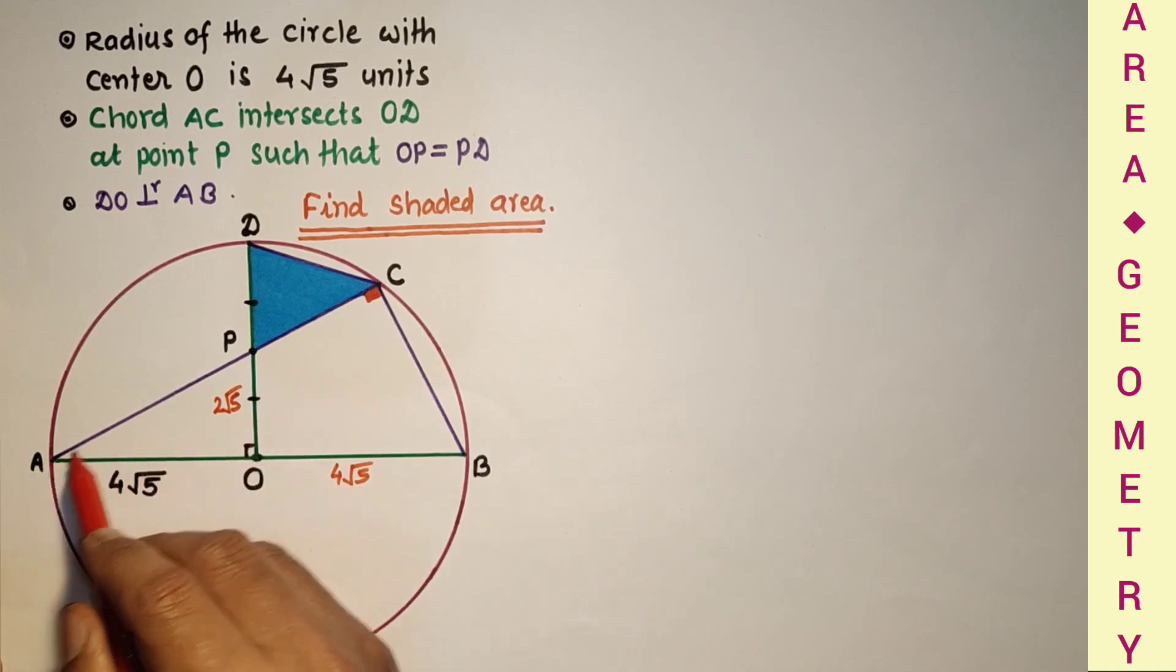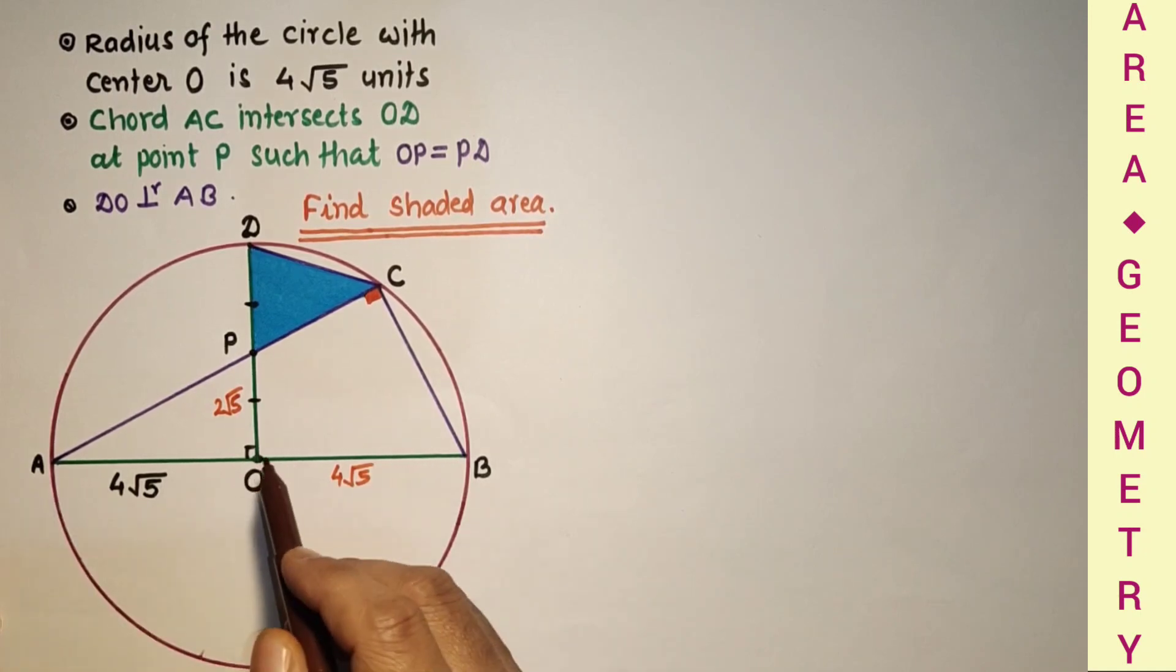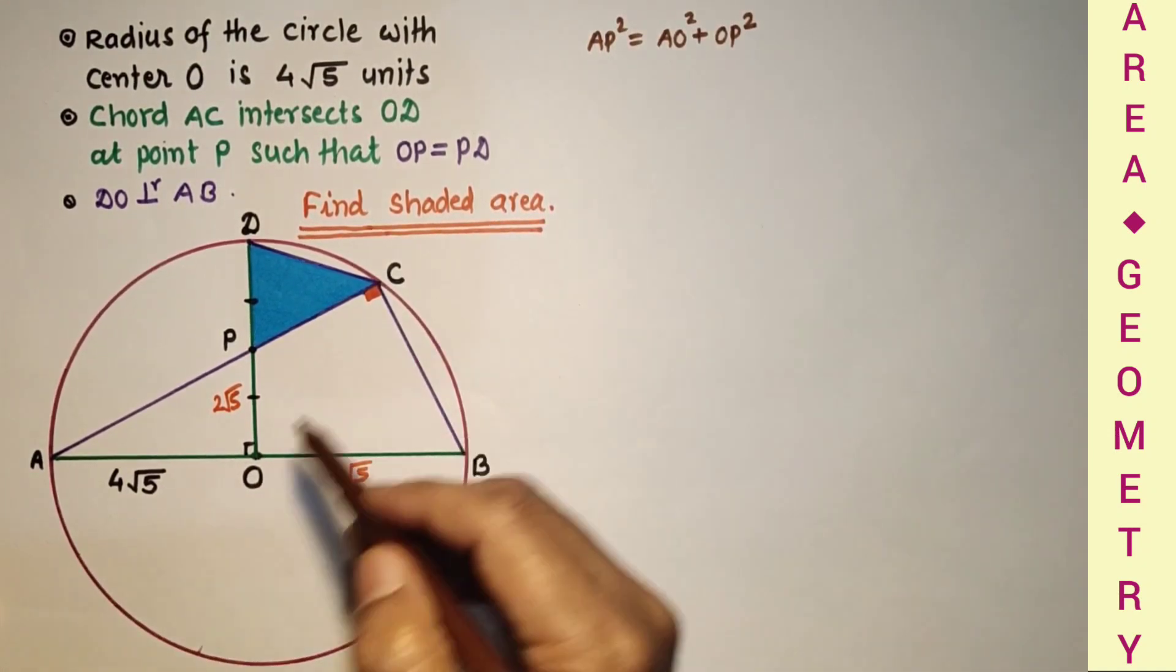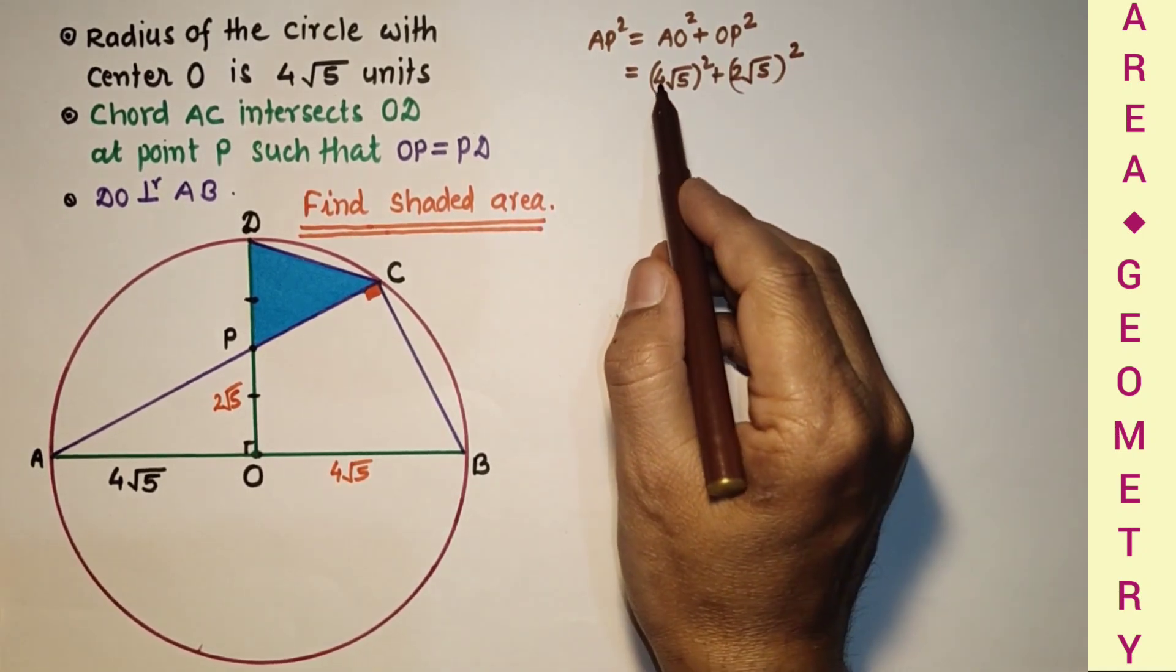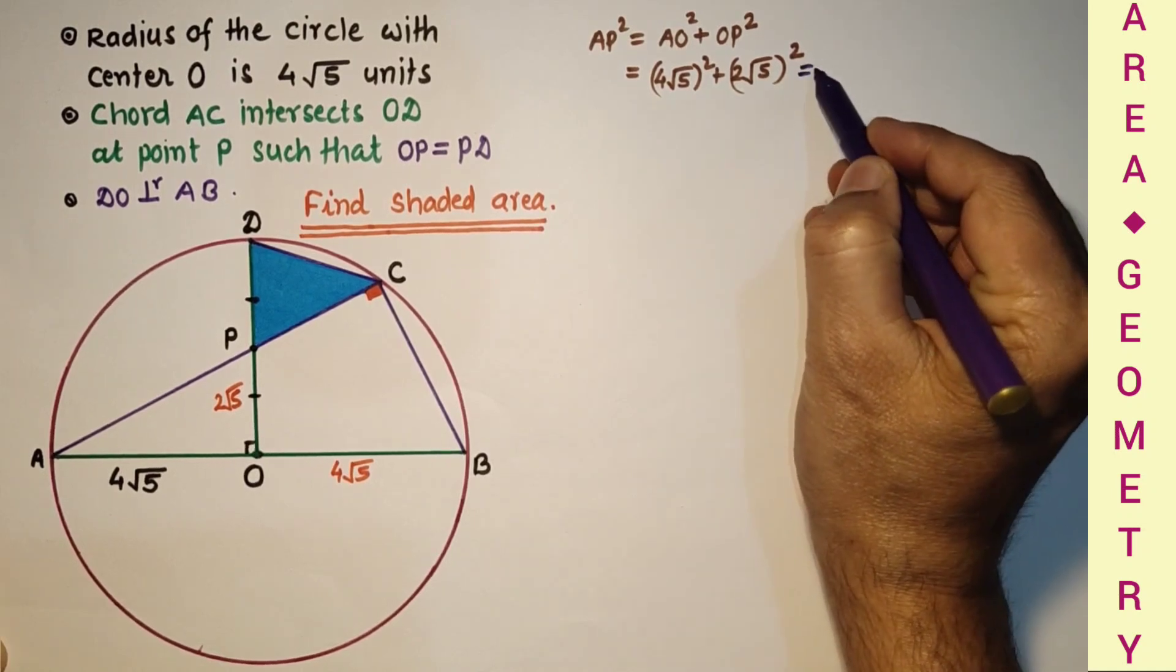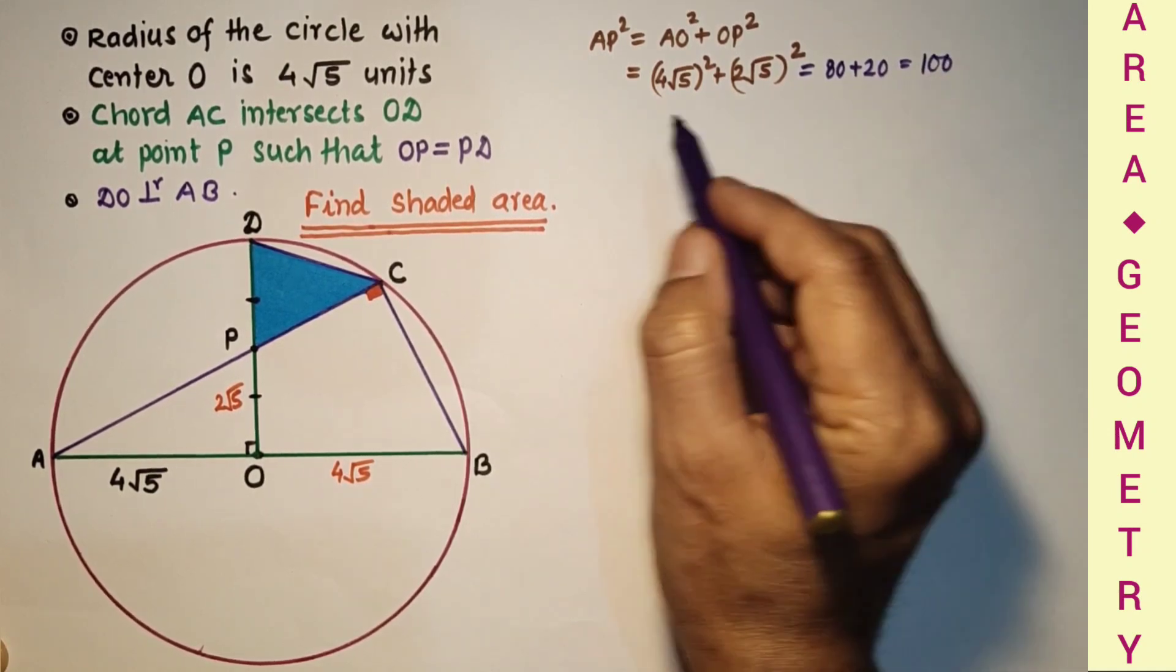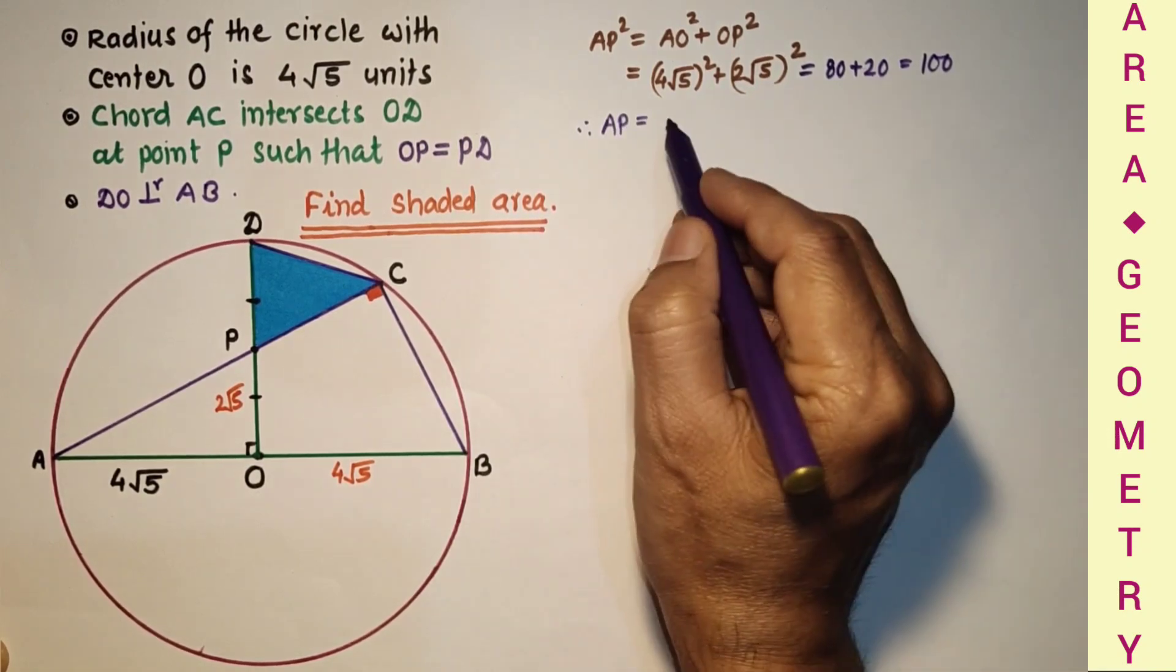So by Pythagorean theorem we can find this AP. So AP square is equal to AO square plus OP square. That is 4 root 5 square plus 2 root 5 square. 16 into 5 is 80, plus 4 into 5 is 20, so that is equal to 80 plus 20, which is 100. And therefore AP is equal to square root of 100, which is 10 units.